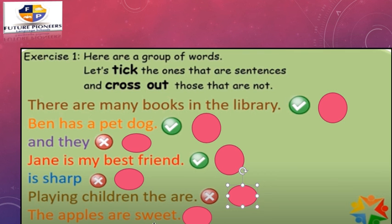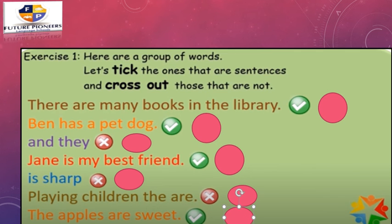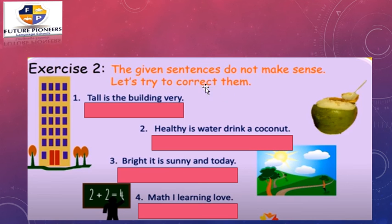What about: The apples are sweet? Does it give us a complete thought? Yes. Does it begin with a capital letter? Yes — the T in 'The' is capital, and it ends with a period. The subject is 'the apples' and the verb is 'are.' This is a sentence — let's put a tick. That's super amazing, class. Now let's go to exercise two.